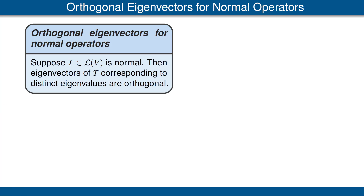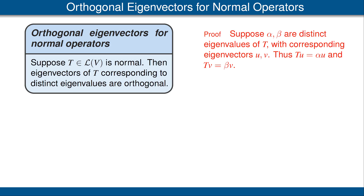The last result in this video states that if T is a normal operator, then the eigenvectors of T corresponding to distinct eigenvalues are orthogonal. Because every self-adjoint operator is normal, this also implies that eigenvectors of a self-adjoint operator corresponding to distinct eigenvalues are orthogonal.